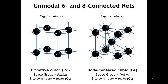We are going to skip over five-connected nets and go to the six-connected net. There is one regular six-connected net, and that is the primitive cubic structure of polonium. And there is one regular body-centered cubic net, and that would be the body-centered cubic structure. By stopping here, we've covered a lot of the important nets for many common crystal structures.